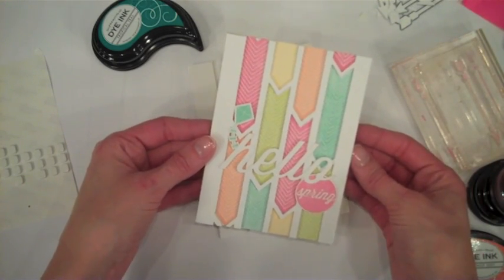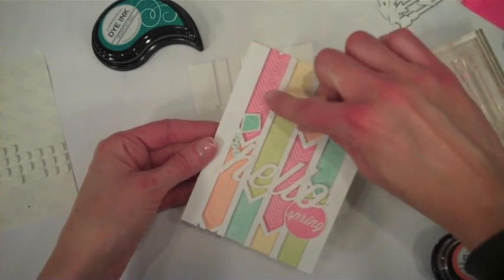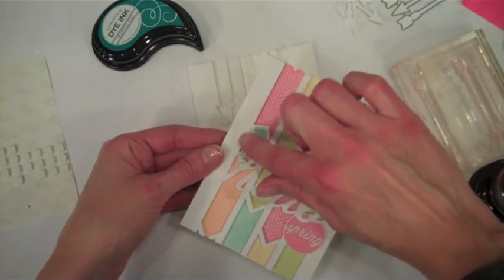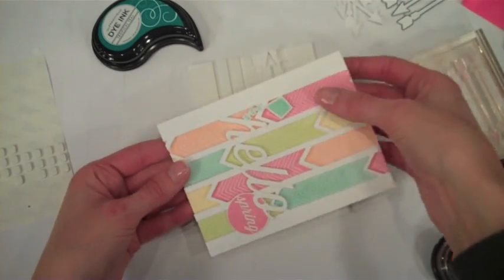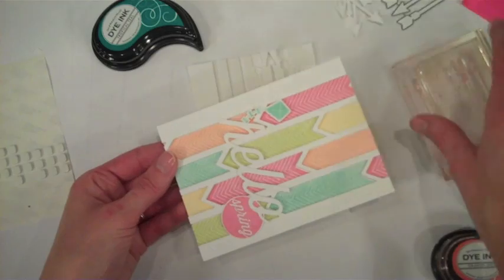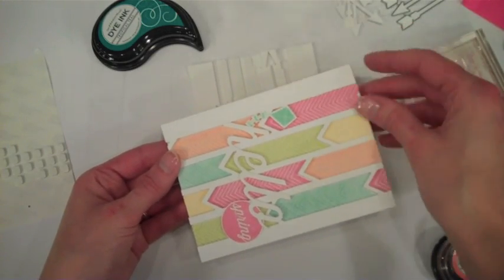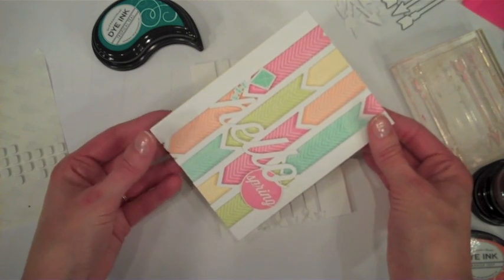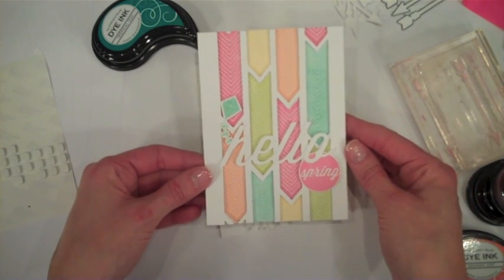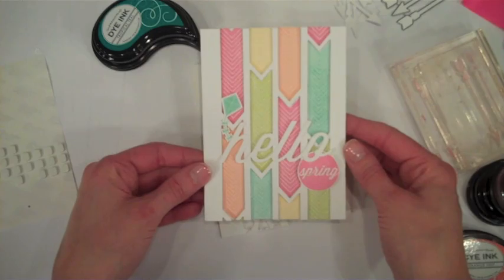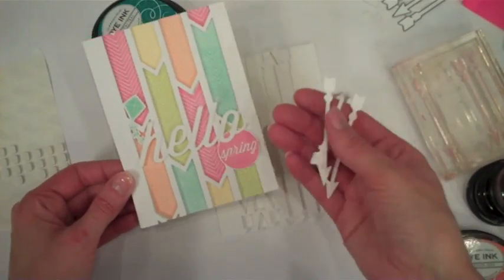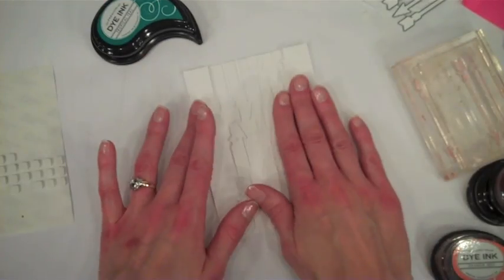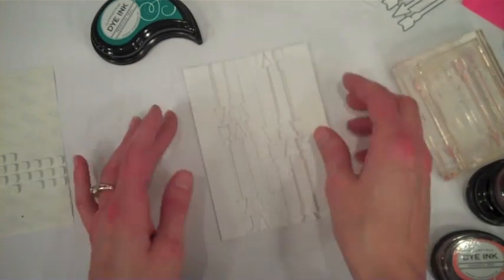That was designed by Heather Nichols and a lot of her dies and stamps, the stamps are actually a little bit larger than the die cut. So if you're using a set like that, what I actually did here is I saved all of my cutouts and I did the stamping onto the actual die cut and then nested it back inside, instead of doing the stamping directly onto the background.